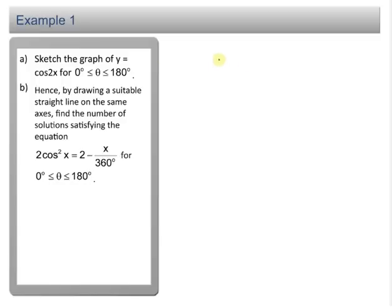For part A, we need to sketch the graph y = cos 2x. Before we start sketching the curve, we have to do some analysis here. So you have cos 2x. This is actually your horizontal stretching that will change your period.